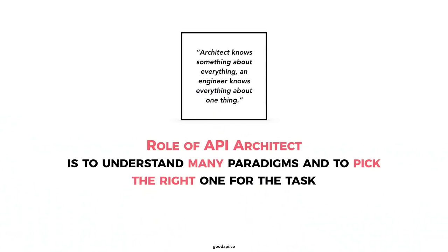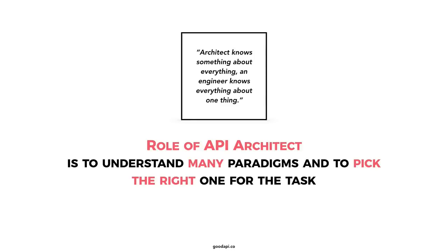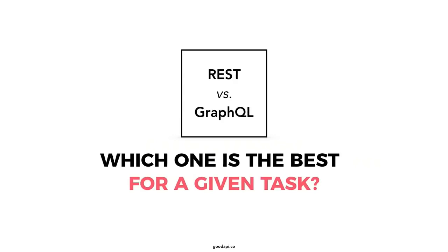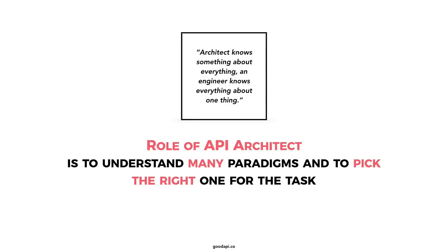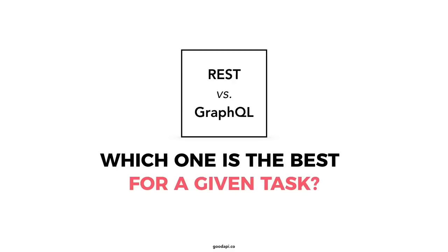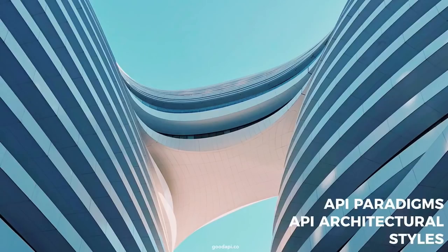If you are an API architect — someone looking at architectural styles — your main role is to understand these styles, these API paradigms, and to be able to pick the right one for a given task. The question is not which one is the best, but which one is the best for a given task. To give you the answer, I would of course need to know the task.